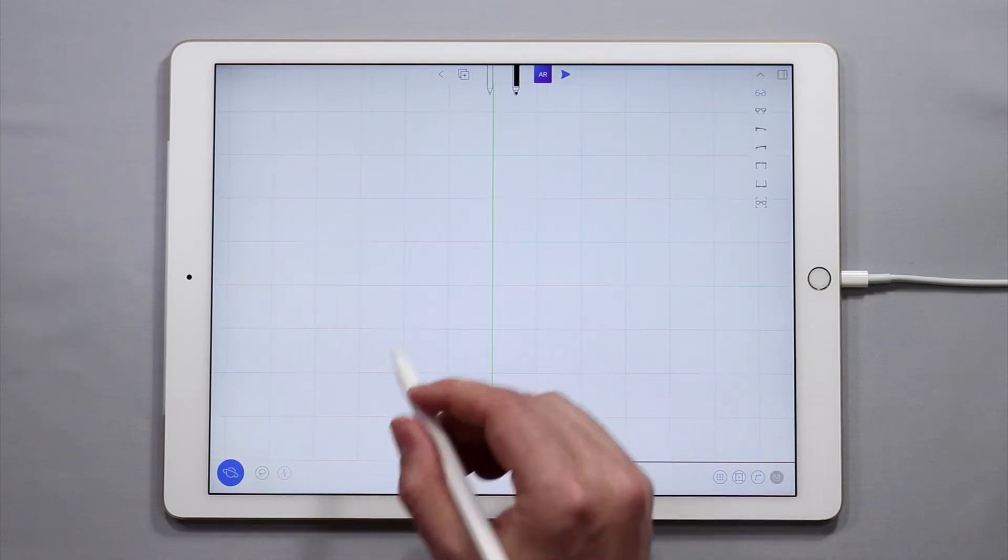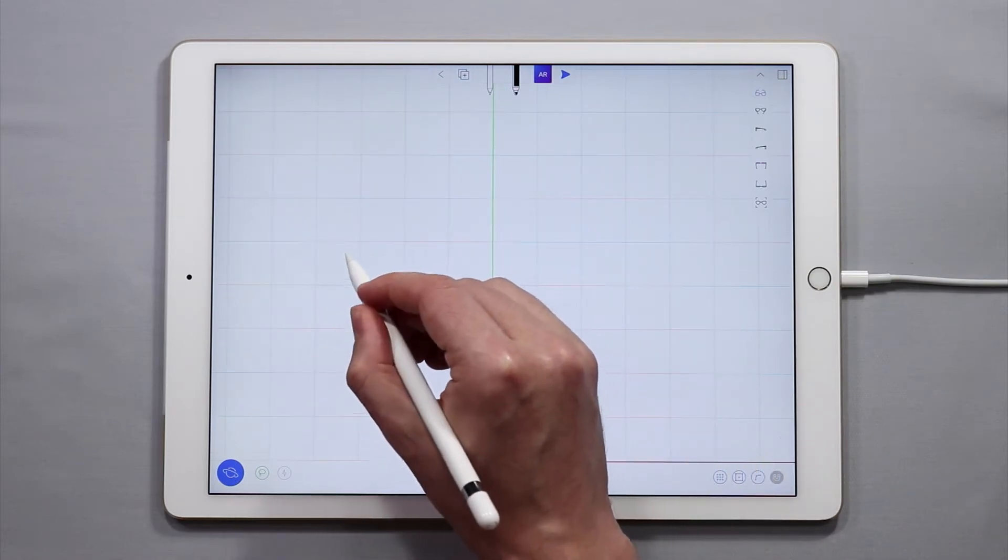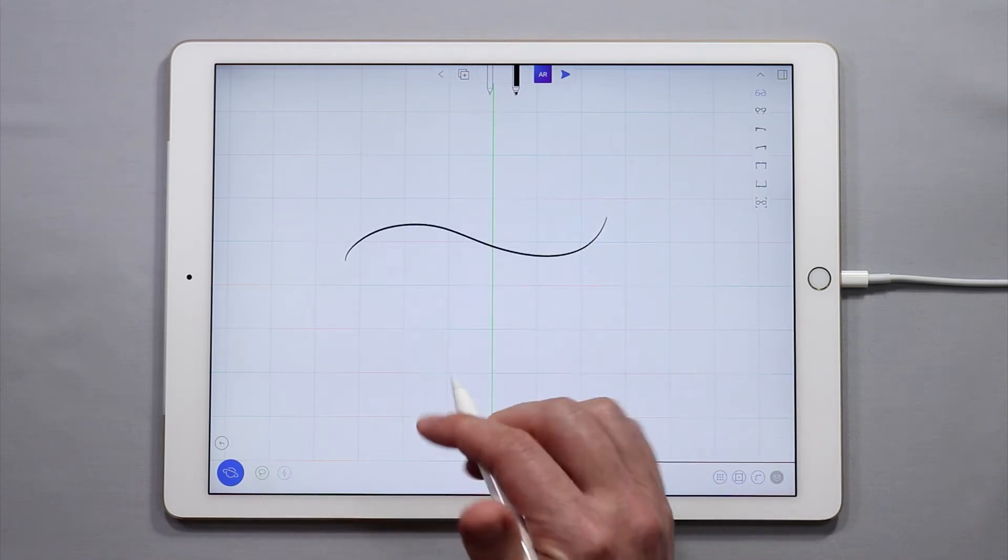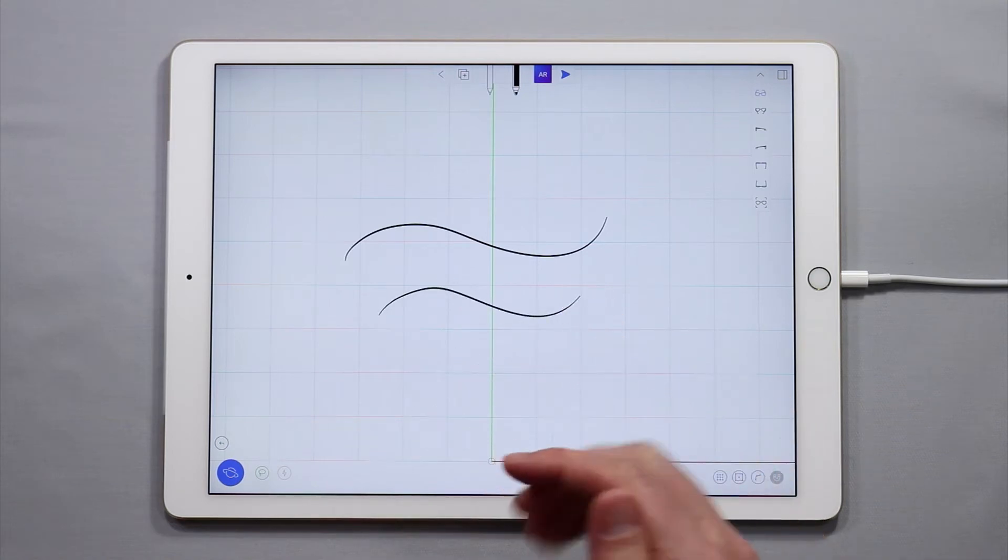To create a line or a curve in UMake simply draw just like you would in any other application or on a piece of paper. You can do it with a stylus or you can use your finger to create curves as well.